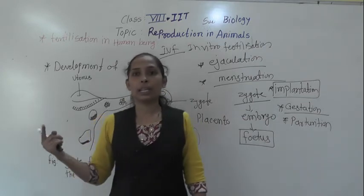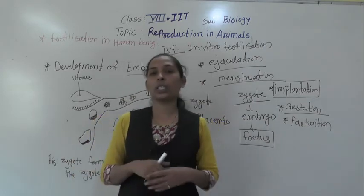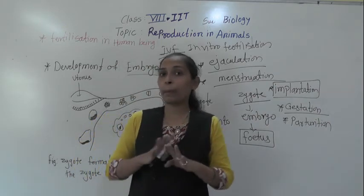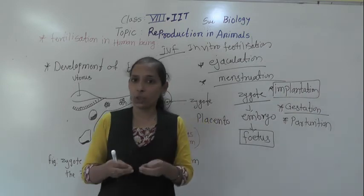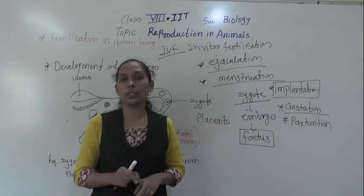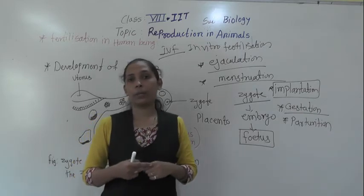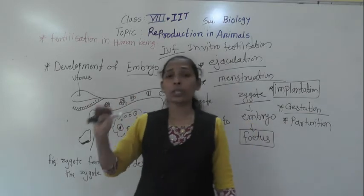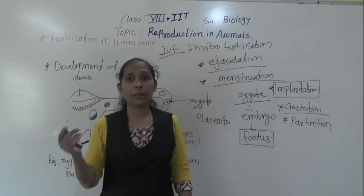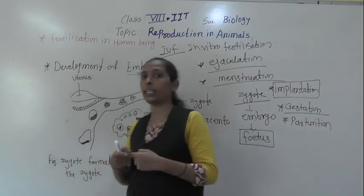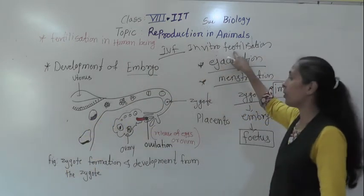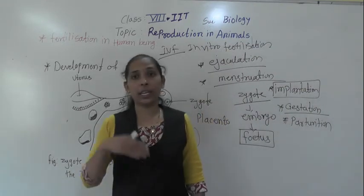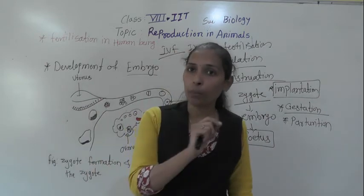The baby produced through in vitro fertilization is called a test tube baby. It is important to note that the baby does not develop in the test tube — only the fertilization happens in the test tube. All the remaining development of the baby happens inside the female's uterus. The process where eggs and sperm get fertilized outside the human body is called in vitro fertilization.